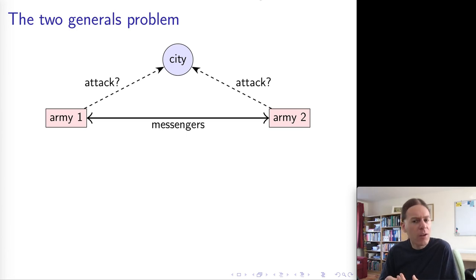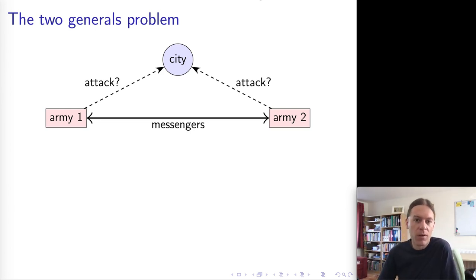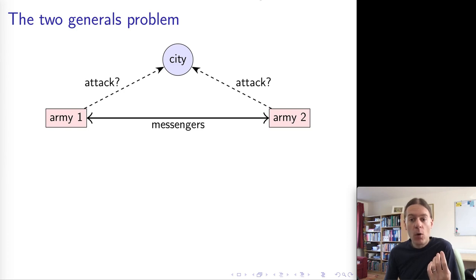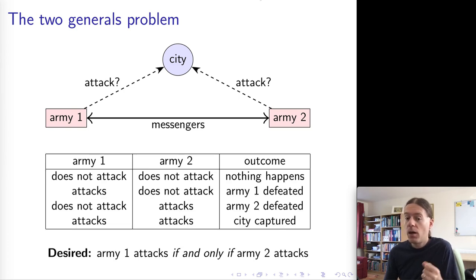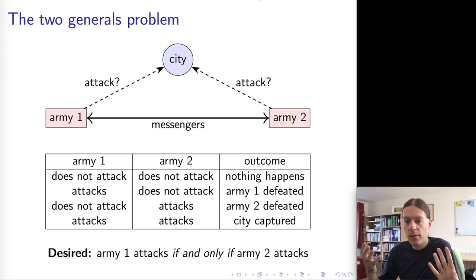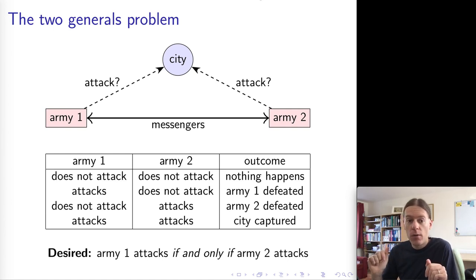This is a military analogy — it's widely known as the two generals problem so I'm just going to stick with the convention. The setting of this thought experiment is that we have two armies, each controlled by one general, and these armies want to attack and capture a city. The city is well defended, so if only one army attacks it will get defeated. It's very important that if the two generals are going to attack, they attack at the same time. As you can see from this truth table, it's fine if neither army attacks, but if only one attacks it all goes terribly wrong. So we really want one army to attack if and only if the other army attacks — both armies attack together.